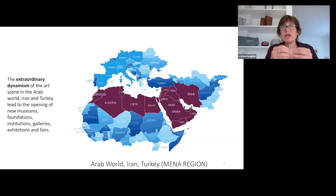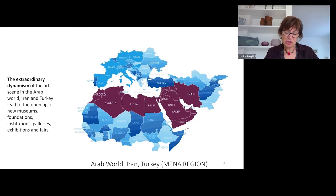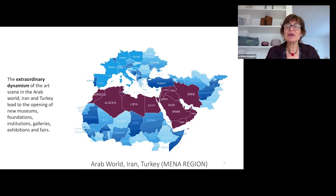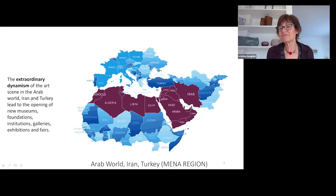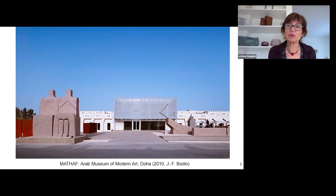You need to look at it from a specific perspective and you need to understand the context they developed in. Let me draw your attention on certain elements. First of all, the extraordinary dynamics of the art scene in the Arab world, Iran and Turkey, that led in the last couple of decades to the opening of new museums, foundations, institutions, gallery exhibitions and fairs. Let me show you just a couple of examples, like the Mathaf, which opened in 2010 and is located in Doha. It's the Arab Museum of Modern Art of Doha, designed by a famous French architect, Baud.